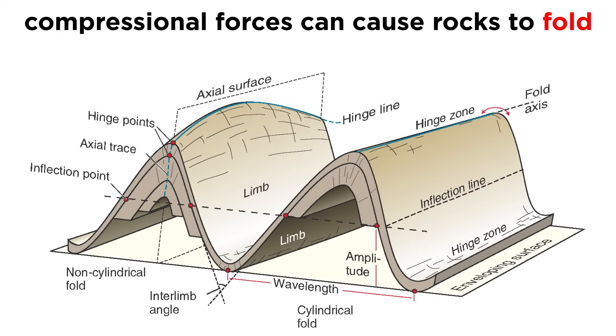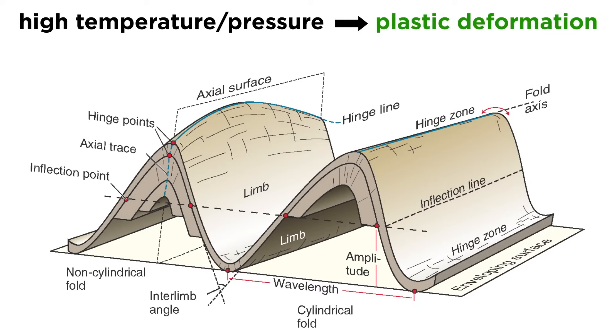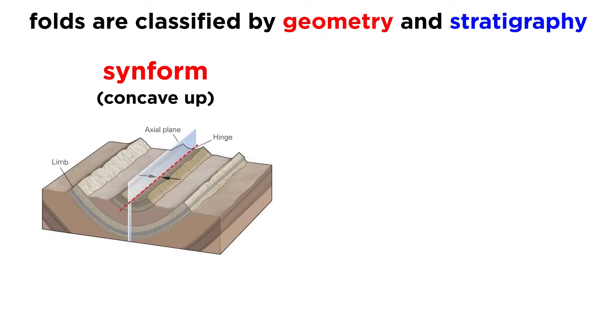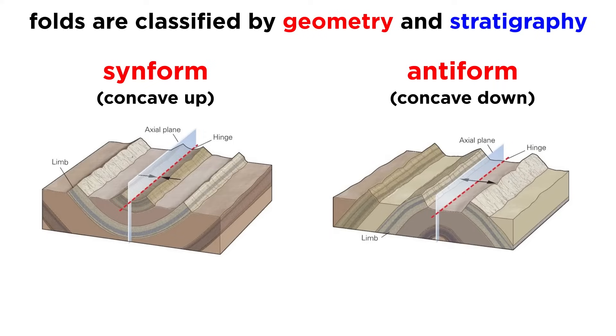In some areas, compressional forces cause rocks to become folded, like a car that gets crumpled during an accident. Folding occurs when a rock is being compressed and the temperature and pressure are just high enough for plastic deformation to occur. Folds are classified based on their geometry and stratigraphy, or arrangement of strata. Folds that are concave up are called synforms, and folds that are concave down are called antiforms.